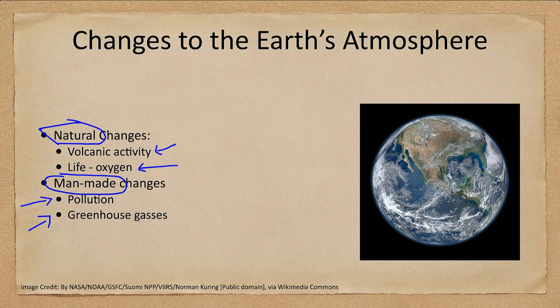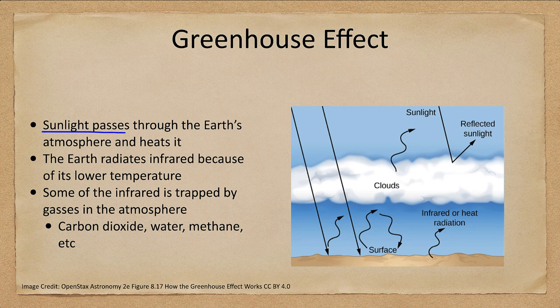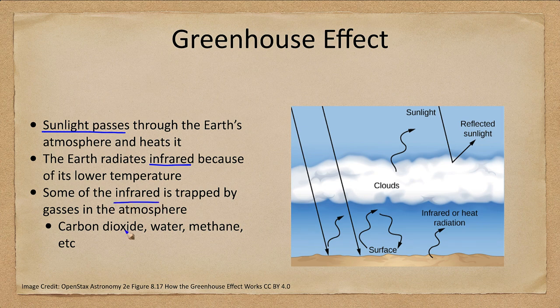One of the important things to talk about is the greenhouse effect. In the greenhouse effect, sunlight passes through Earth's atmosphere and heats the ground — the surface heats, the atmosphere heats, and the Earth radiates that temperature away. Sunlight comes in in the visible part of the spectrum, which penetrates the atmosphere. The Earth radiates infrared light because it is at a lower temperature. Recall from previous lectures how a blackbody works: it absorbs all incoming radiation and emits radiation depending only on its temperature.